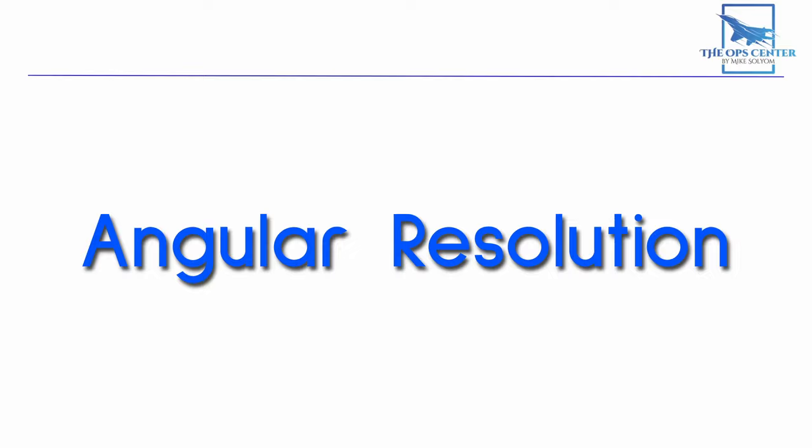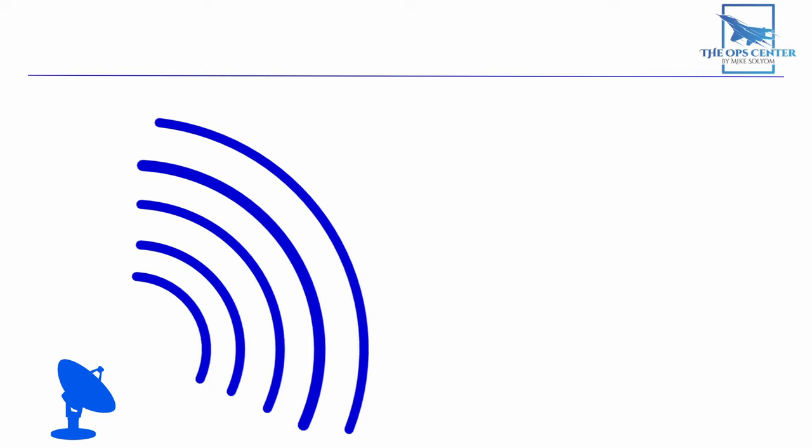This is important, because if multiple objects appear inside one of those resolution cells, like aircraft flying in close formation, then they'll appear as just a single return. But as we discussed earlier, this extra resolution comes at the cost of range.